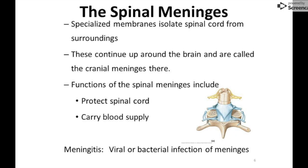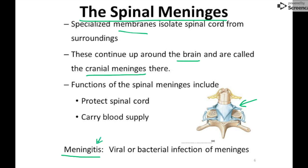Surrounding all of this are the spinal meninges — membranes that completely surround the spinal cord and also go up around the brain, where they're called cranial meninges. Their function is to isolate your brain and spinal cord from the rest of the body, so an infection doesn't necessarily spread there. Most commonly you hear about meningitis — inflammation of the meninges, usually caused by a viral or bacterial infection.